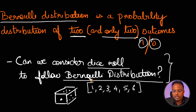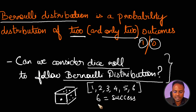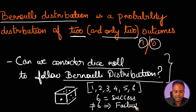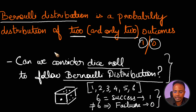But if you define it in such a way that getting a 6 equals success, and anything other than 6 equates to a failure — success is marked as 1 and failure as 0 — then in that case, you can reframe this problem to follow a Bernoulli distribution.